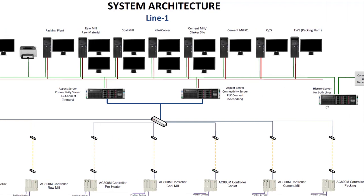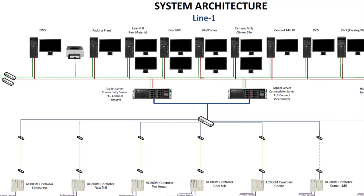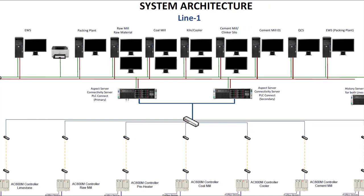We have a pair of servers — operator station servers — which have redundancy, because if one server goes down the next will take over the process. The operation, monitoring, and control of the process is very critical; we do not want to stop the process. This is why we introduce redundancy. We have redundant servers — one is primary and the other secondary. These servers read the data from the PLCs.